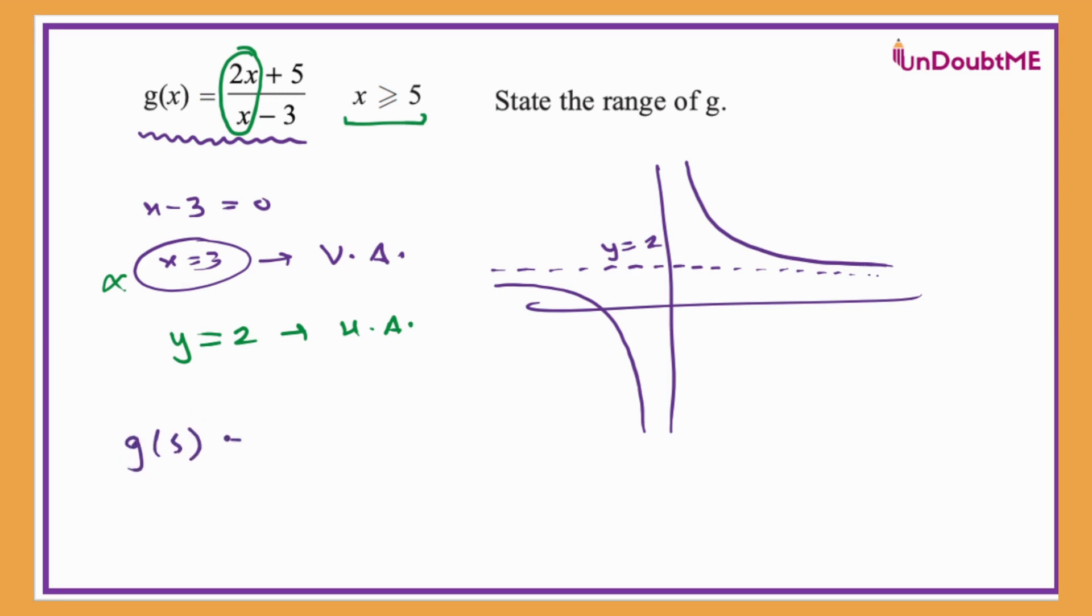So if I find g of five, then it will be two times five plus five over five minus three. That is 10 plus five over two, that is 15 by two.